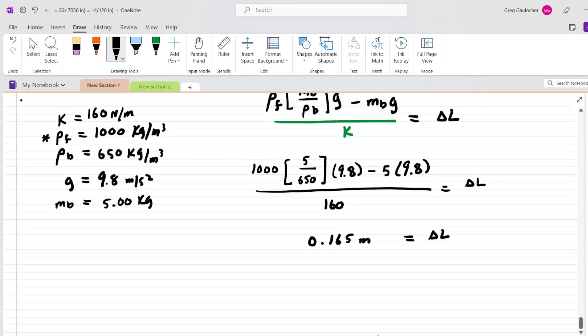Your homework system might want you to express the final answer in centimeters. So if so, we can set up a very simple conversion. We all know that one meter is equivalent to 100 centimeters. And by setting up the conversion factor in this fashion, the meters would cancel out and we would end up with an answer of 16.5 centimeters for the elongation of the spring. And that indeed is the correct answer to the question.